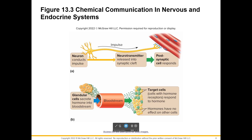In diagram A, the neuron is telling the muscle to move — maybe a patellar reflex. In diagram B, glandular cells — for example LH traveling through the bloodstream causing ovulation.